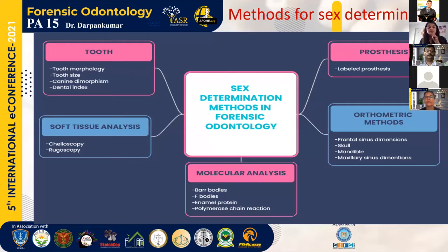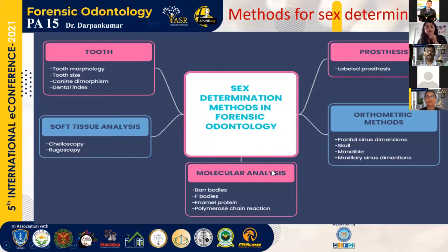The methods used for sex determination in forensic odontology include tooth size, tooth morphology, canine dimorphism, dental index, soft tissue analysis such as rugoscopy and cheiloscopy, molecular analysis such as Barr bodies, F bodies, enamel proteins, and labour processes. Osteometric methods using skull, mandible, frontal sinus dimensions, and maxillary sinus dimensions can also help.